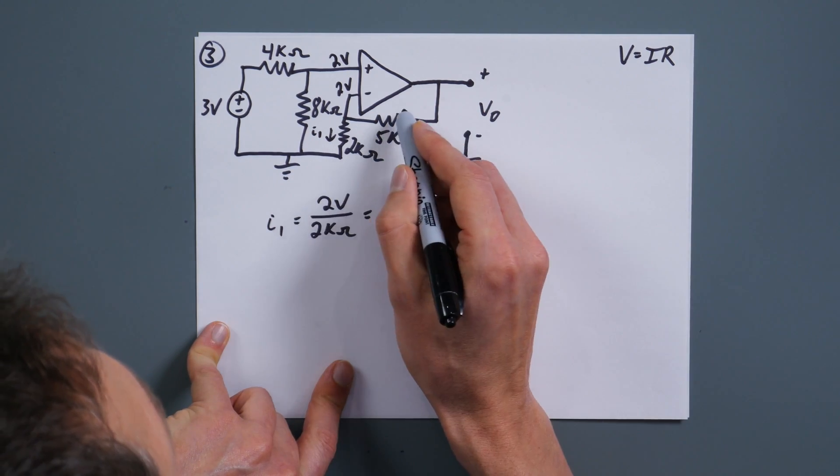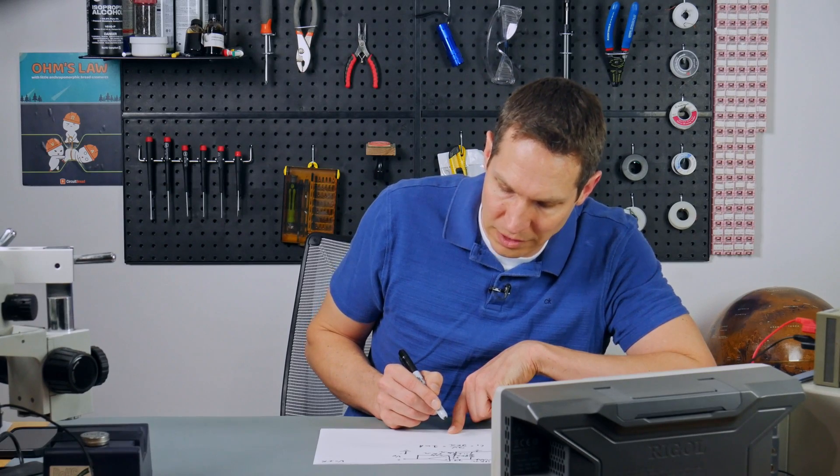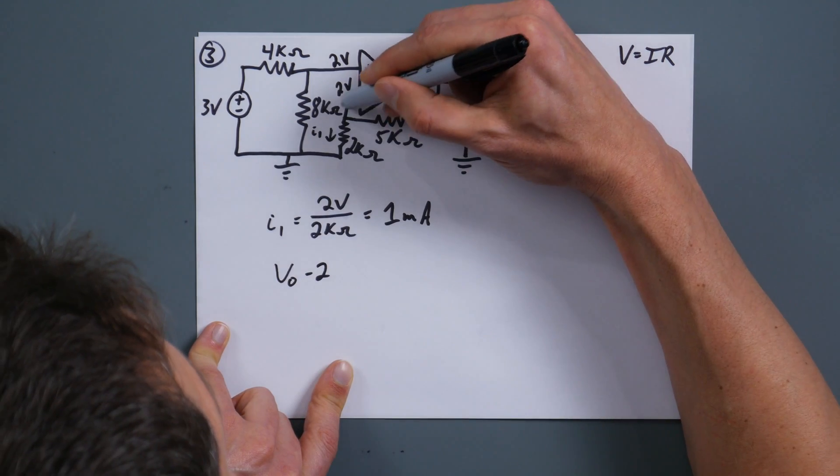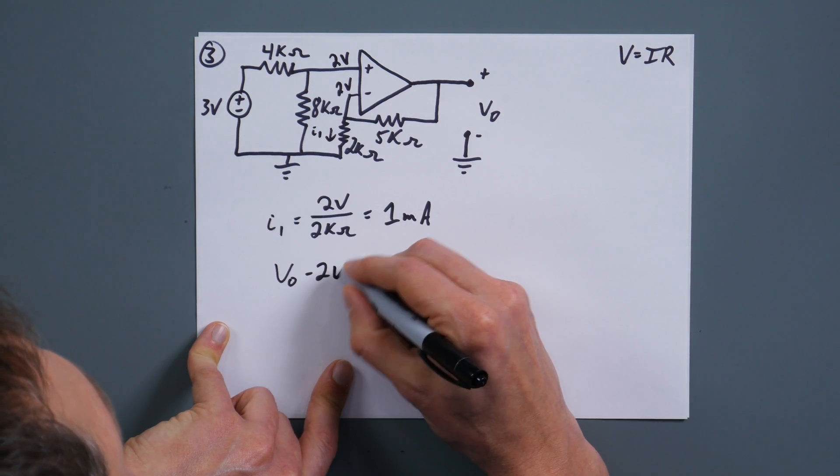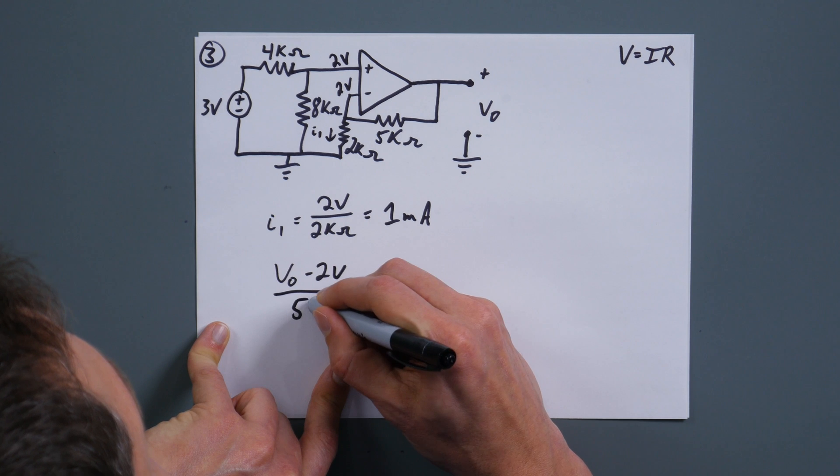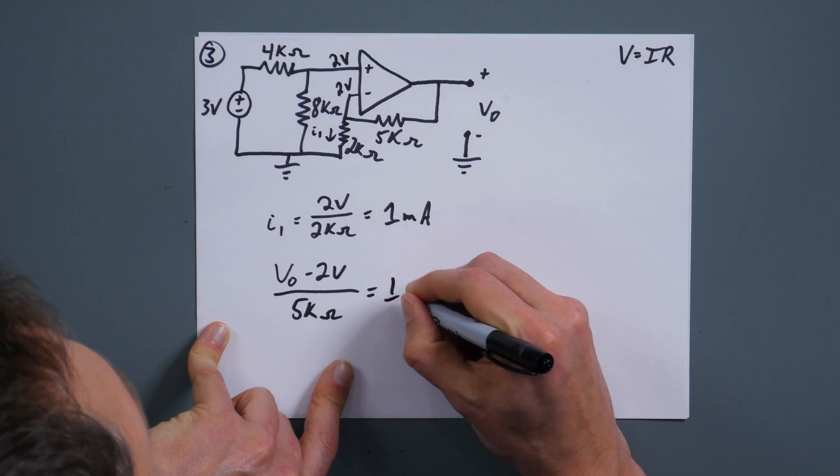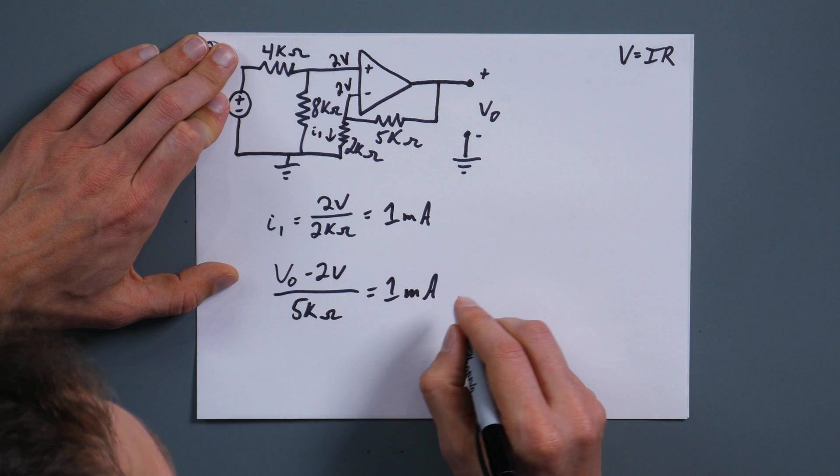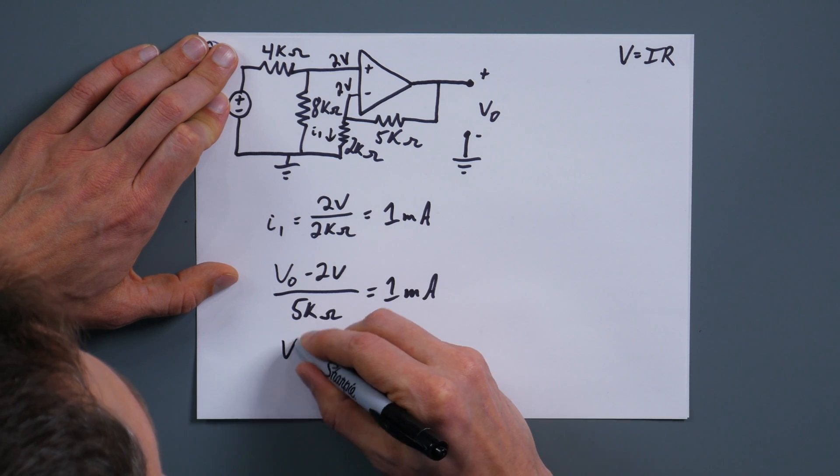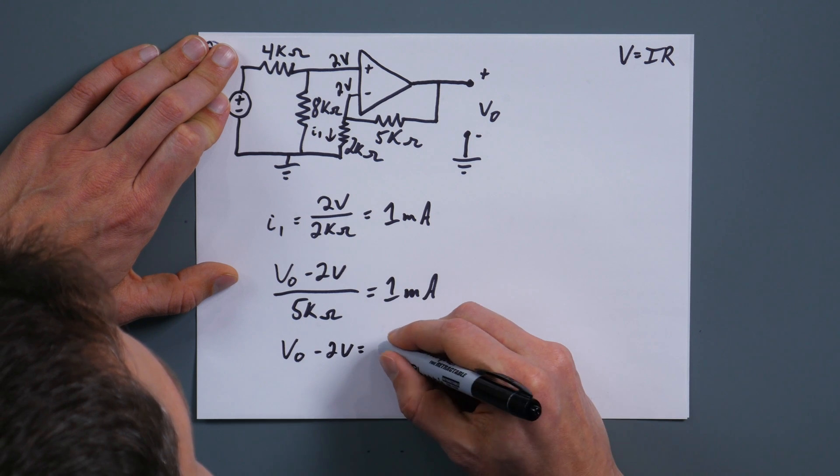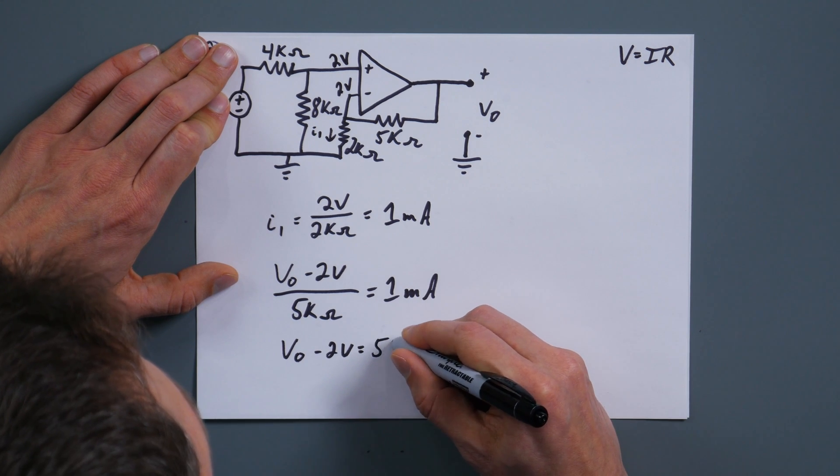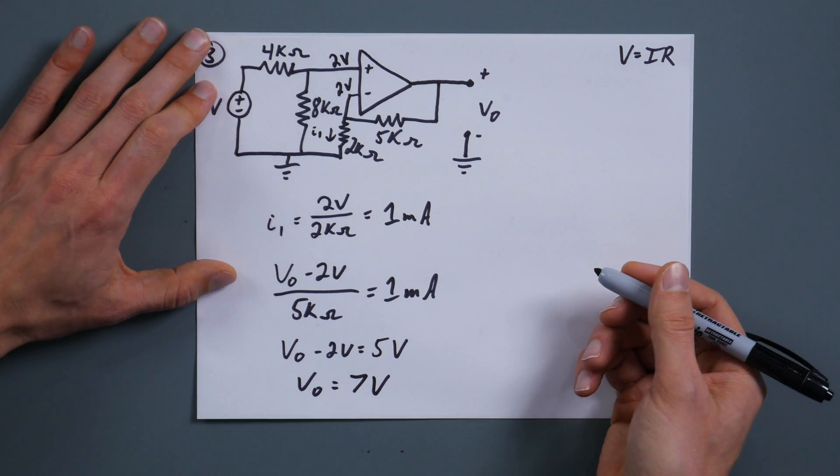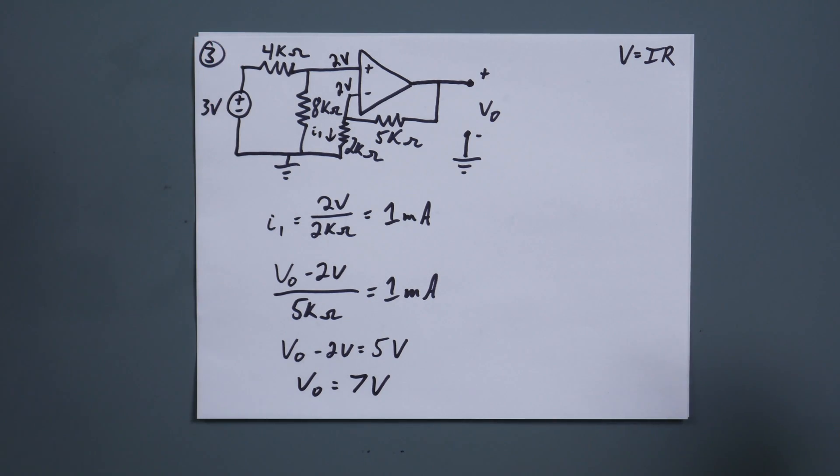So now, since we know the current through there is one milliamp, we know it's one milliamp through there. So now we just have to find that voltage in comparison to I1 right there. So we know our Vout minus two volts, because don't forget that this is two volts, this isn't ground. So it's your voltage out minus two volts over five kilo-ohms is going to be one milliamp. We take that 5k and we multiply it on both sides, and those units are going to cancel out and give us Vout minus two V equals five volts. And then it's just simple math. Vout equals seven volts. That's it. That's the right answer. It's a miracle.